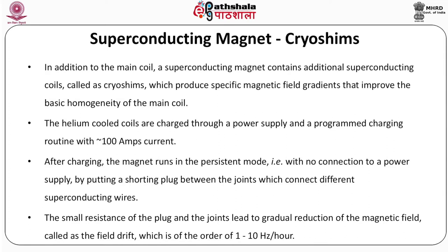Cryo-shims. In addition to the main coil cooled in liquid helium, a superconducting magnet contains additional superconducting coils called cryo-shims, which produce specific magnetic field gradients that improve the basic homogeneity of the main coil. The helium-cooled coils are charged through a power supply with approximately 100 amps current. After charging, the magnet runs in the persistent mode with no connection to a power supply. This is done by putting a shorting plug between the joints connecting different superconducting wires. The small resistance of the plug and joints leads to a gradual reduction of the magnetic field, called field drift, which is of the order of 1 to 10 hertz per hour.